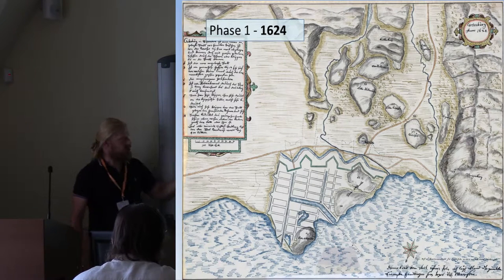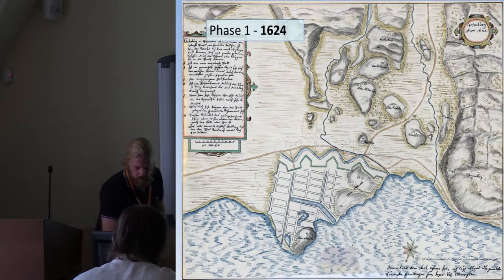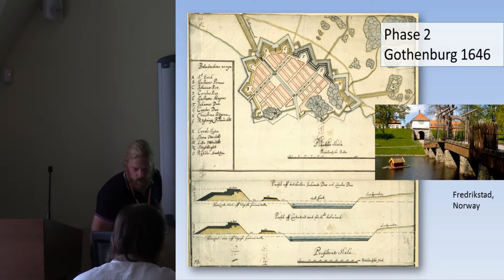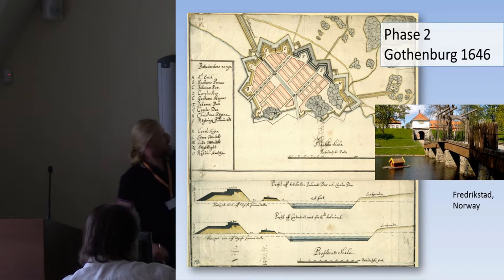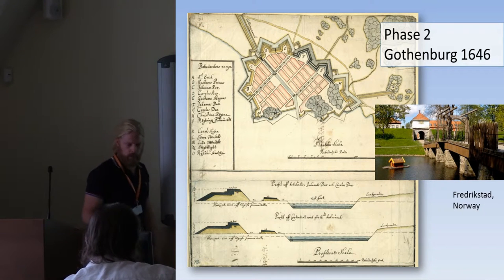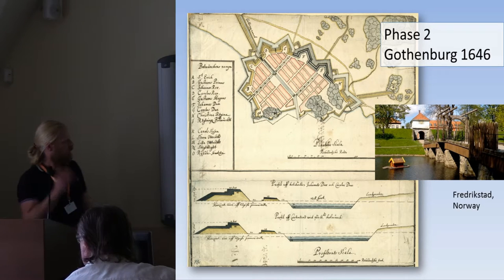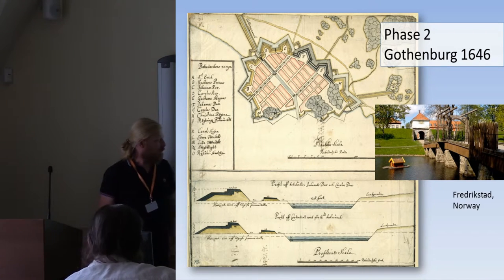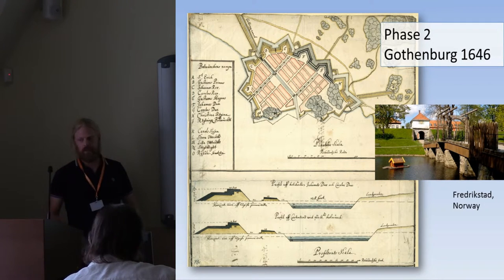In this first phase there were pretty low ramparts. The idea at this time was to build a citadel at the eastern part, but that was never done. That gives us phase two, when the fortifications were consolidated. The citadel idea was abandoned, but you have a whole city of fortifications. Now you have a city plan you can still recognize today. You can see the fortifications — a rampart with the fosse in front and the parapet — and a picture from Fredrikstad gives an idea of how that looked in 1646.